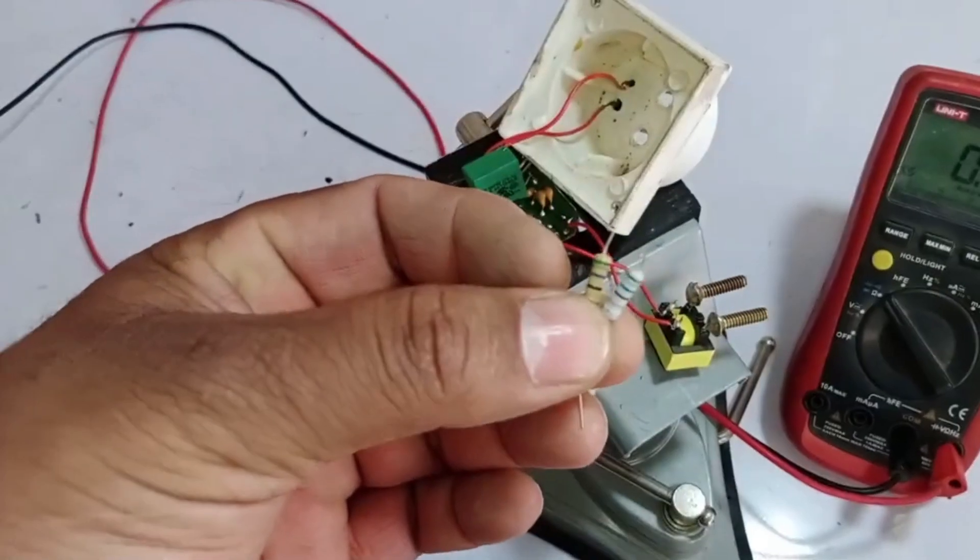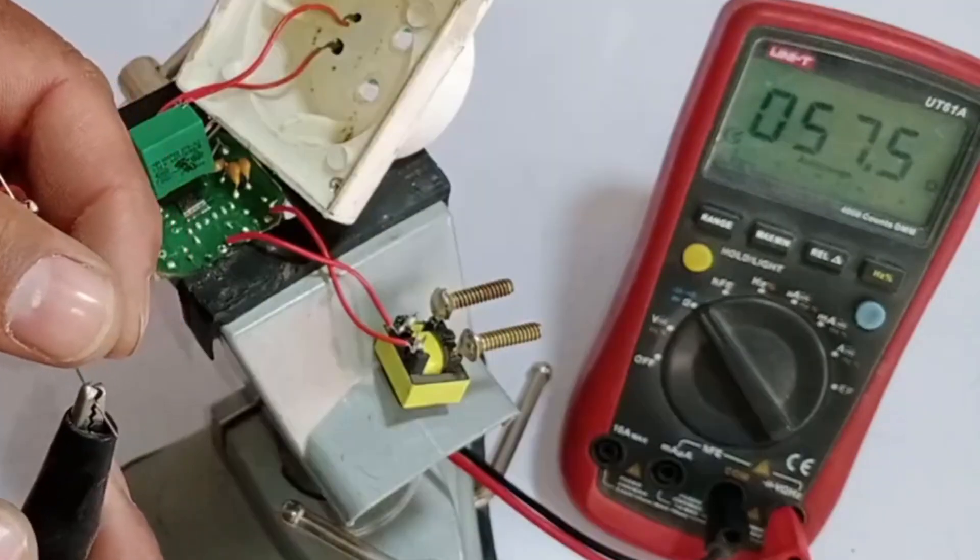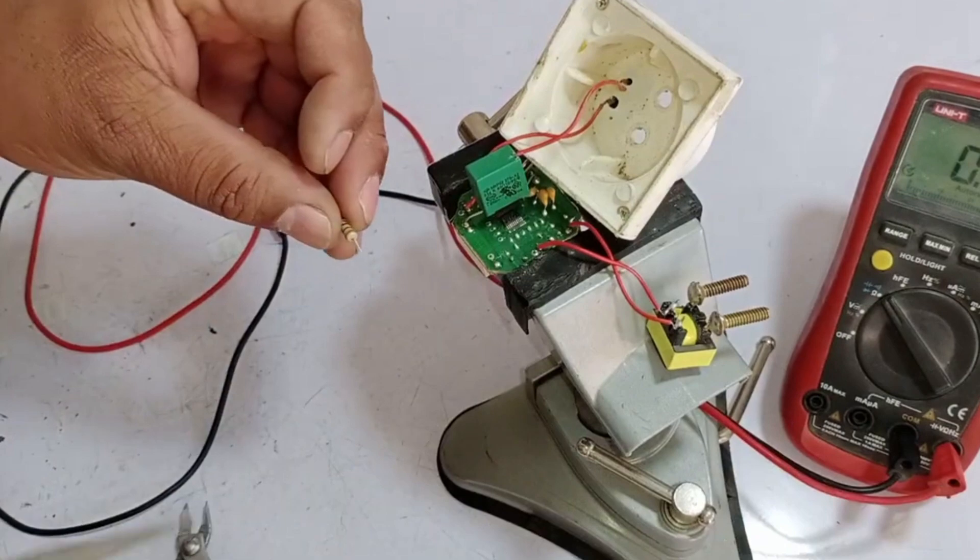Now look, we have taken another resistor, which is identical to the original one. Both have the same specifications, and it shows 57.4 ohms, which is the exact value of the resistor. We will now install this new resistor.